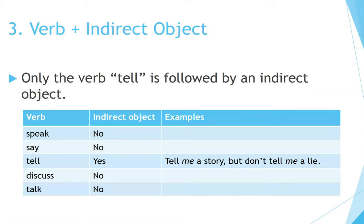Number 3: Verb plus indirect object. Only the verb 'tell' is followed by an indirect object. Speak, say, discuss, and talk — no. Tell — yes: Tell me a story, but don't tell me a lie.